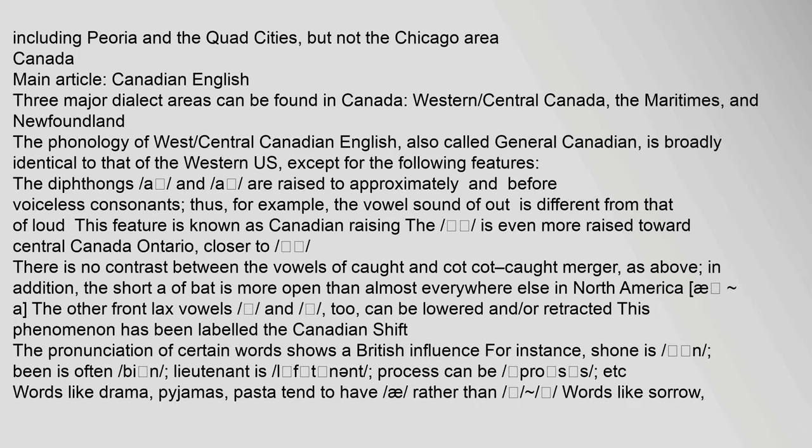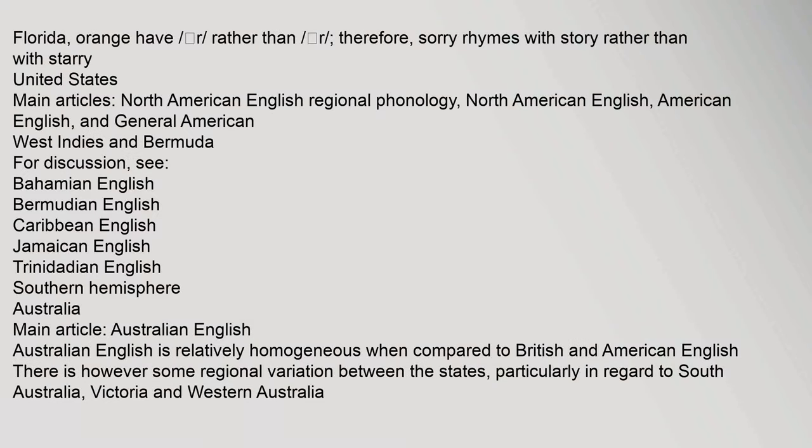The pronunciation of certain words in Canadian English shows a British influence; for instance, 'been' is often pronounced by n, 'lieutenant' as 'leftenant,' and 'process' as 'pros.' Words like 'drama,' 'pajamas,' and 'pasta' tend to have a broad 'a' rather than a short one. Words like 'sorrow,' 'Florida,' and 'Orange' have a different vowel quality, so 'sorry' rhymes with 'story' rather than with 'starry.'